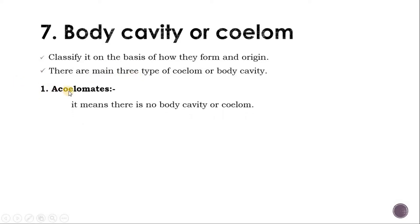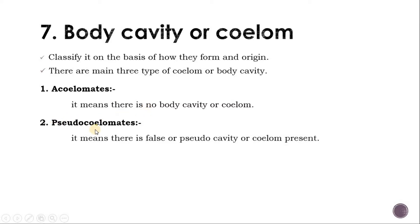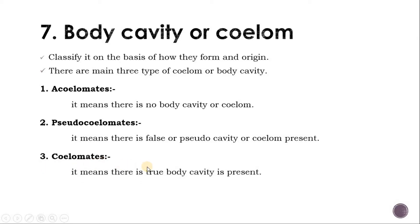First is acoelomate: 'a' means no, 'coelom' means cavity or body cavity. Acoelomate means there is no body cavity or coelom present inside the body. Second is pseudocoelomate: 'pseudo' means false, so there is a false or pseudo cavity present inside the body. Third is eucoelomate or coelomate: there is a true body cavity present inside.